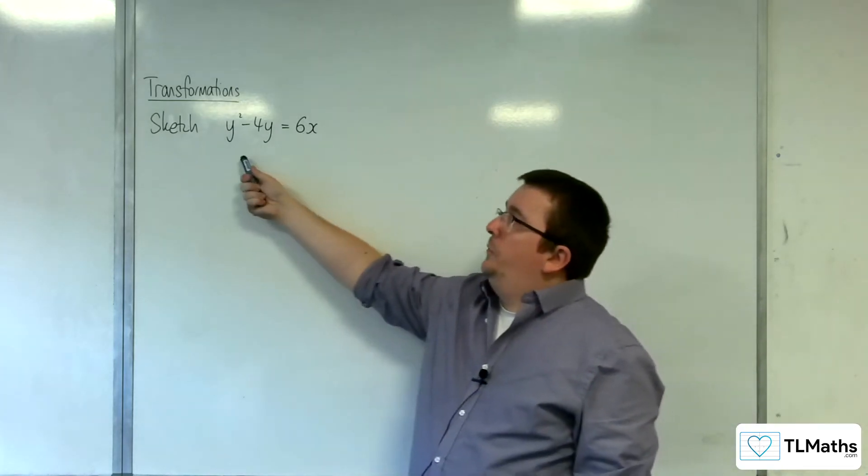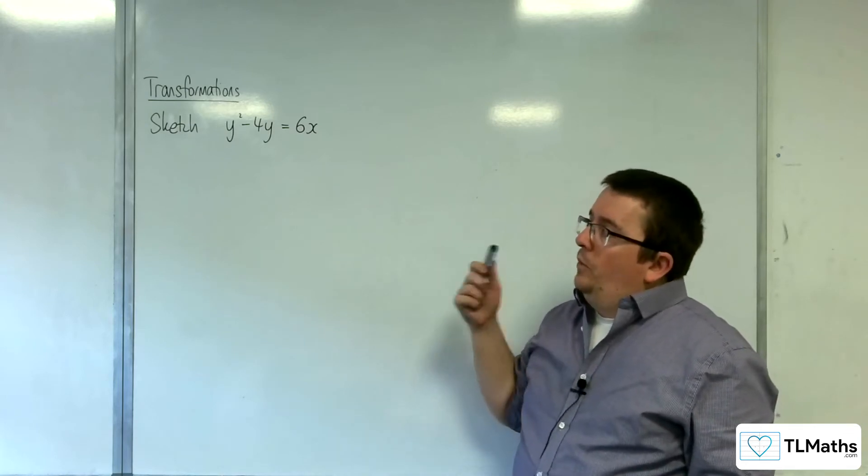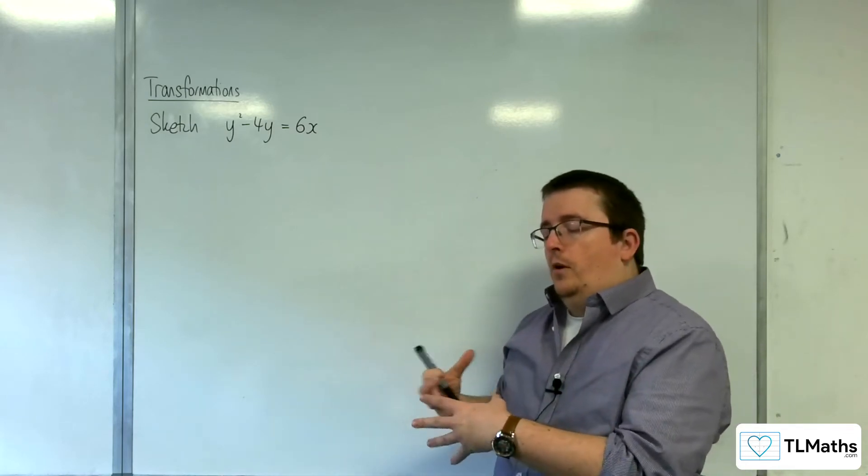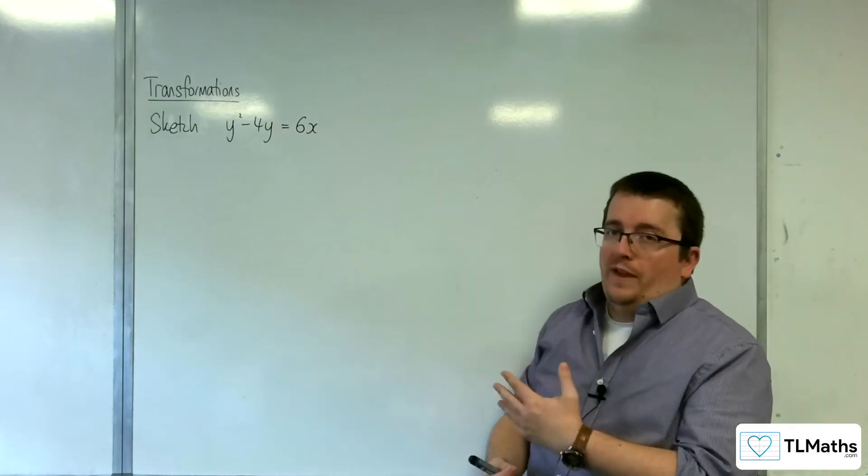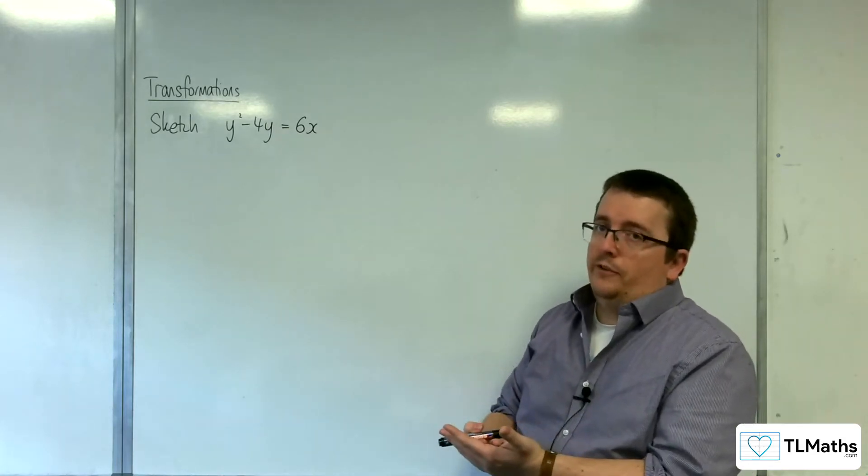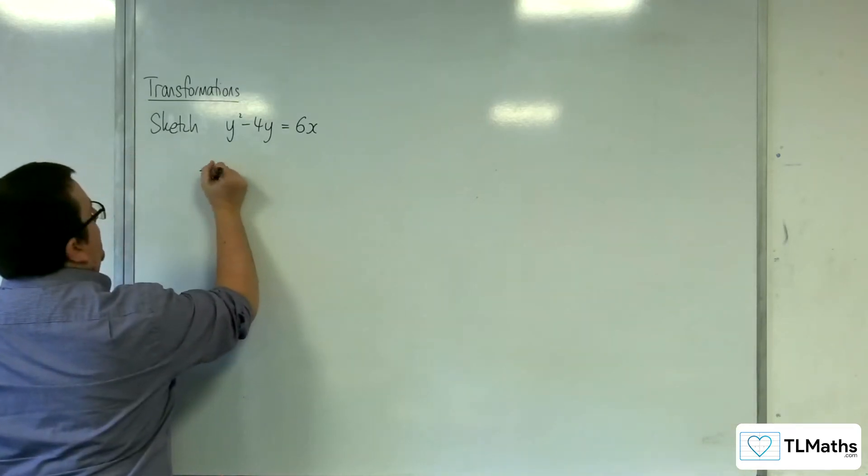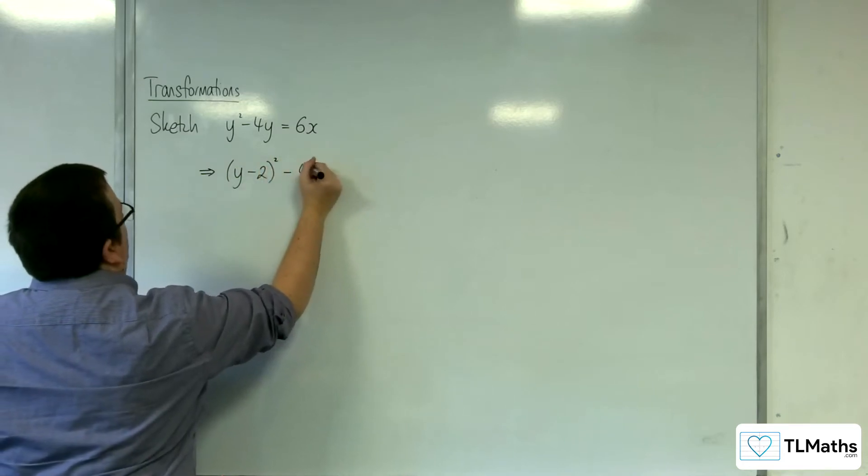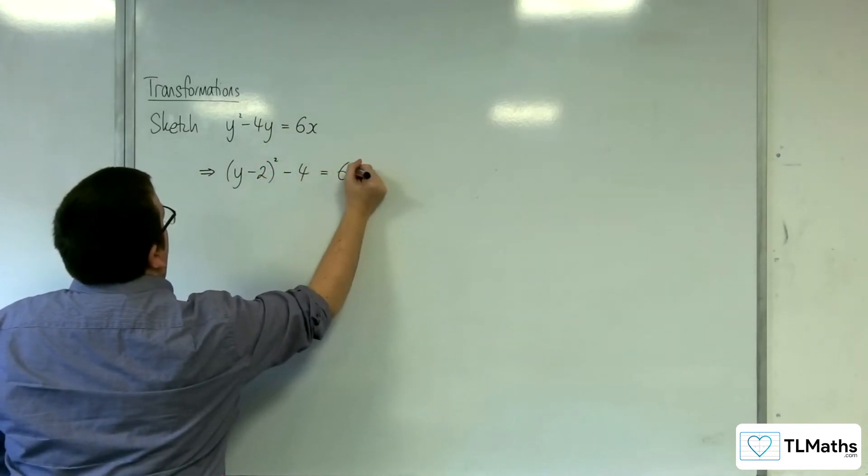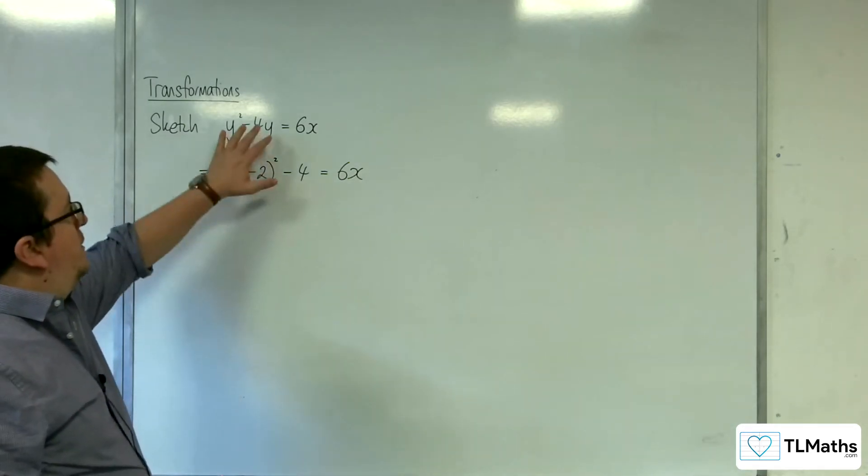Now, the problem is that we've got this y squared take away 4y on the left-hand side. Now, we want to try and spot what transformation has taken place. So the only way to deal with that would be to complete the square on the left-hand side. So let's do that. So we'd have y take away 2 all squared take away 4 is equal to 6x. So that's the left-hand side now completed square.